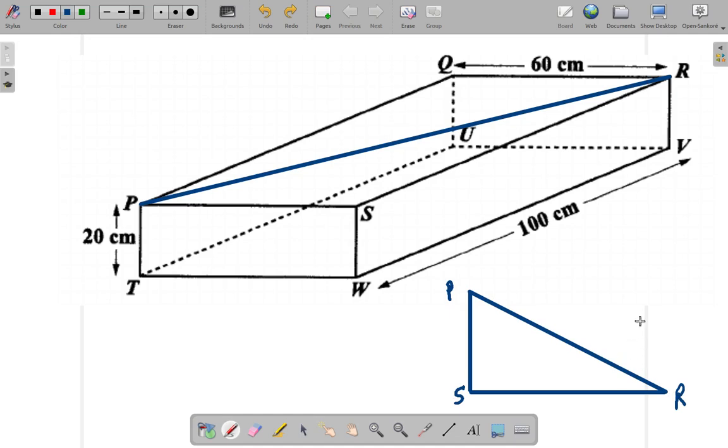Notice that from Q to R is 60 centimeters, so from P to S is the same 60, that's 60 centimeters. This length from W to V is the same as from S to R, which is 100, so we can calculate this.